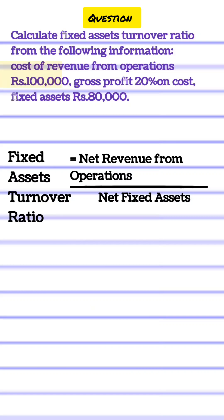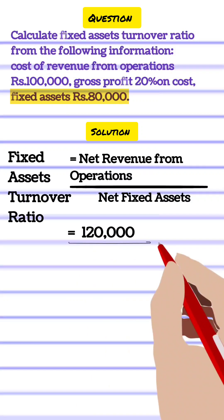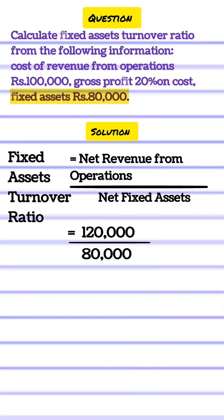In the given question, cost is Rs. 1 lakh and gross profit is 20% on cost. Net sales is cost plus gross profit, so 1 lakh plus 20,000 comes out to be Rs. 1 lakh 20,000. Net fixed assets are given as Rs. 80,000. Hence, fixed assets turnover ratio becomes 1 lakh 20,000 divided by 80,000, which is 1.5 times.